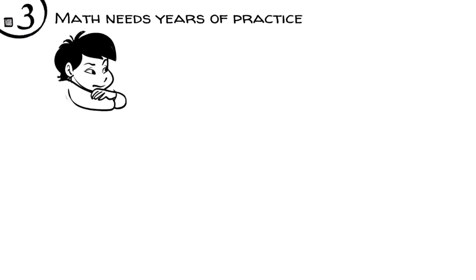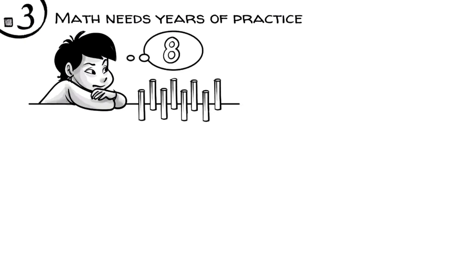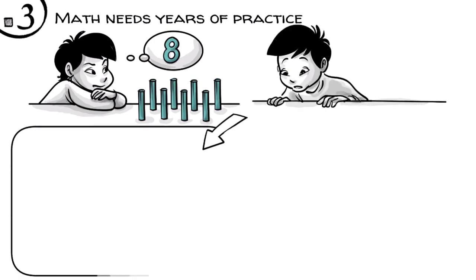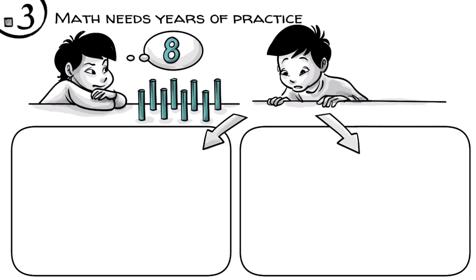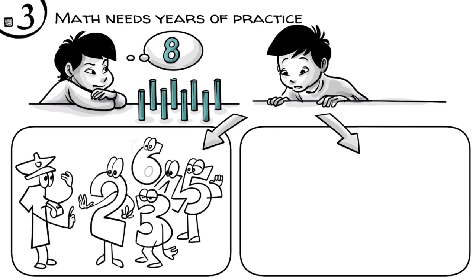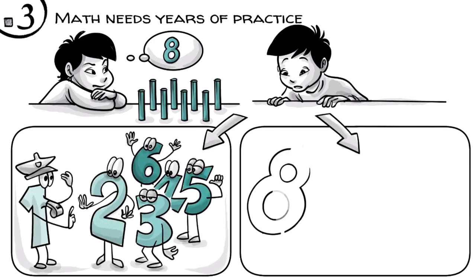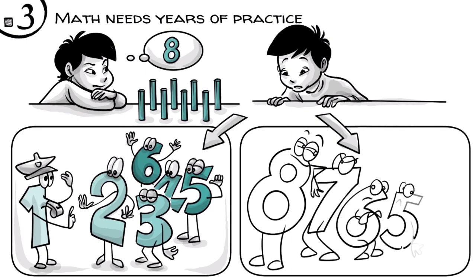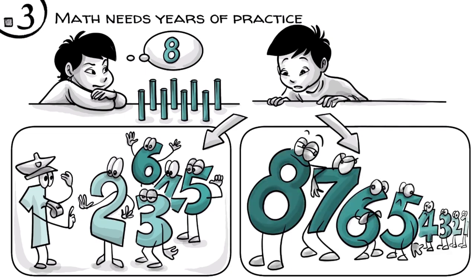Math needs years of practice. This becomes clear when we look at how children learn to understand a number – say, eight. Not the symbol eight, but the idea of the quantity of eight. To internalize this seemingly simple idea, children need a lot of practice in two skills. First, they need to learn how to create order, and then, later on, how to create hierarchical relationships.